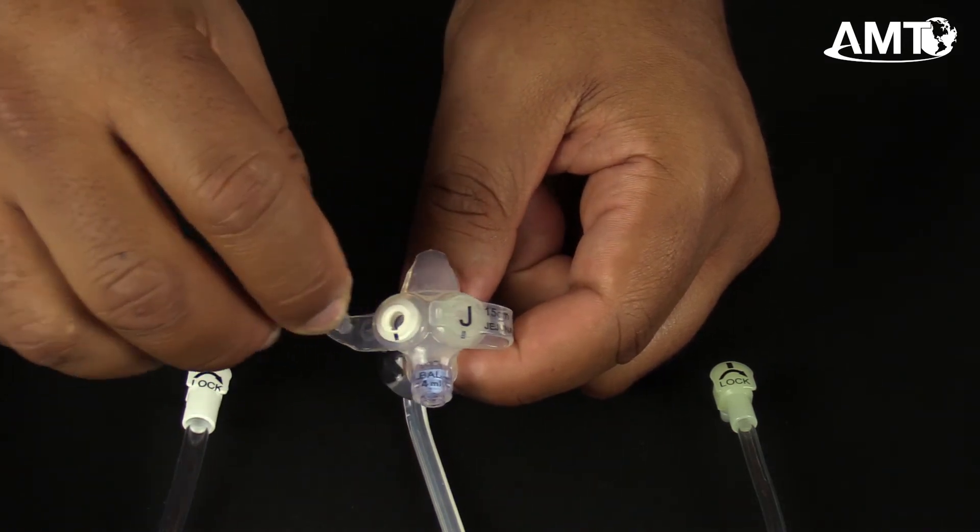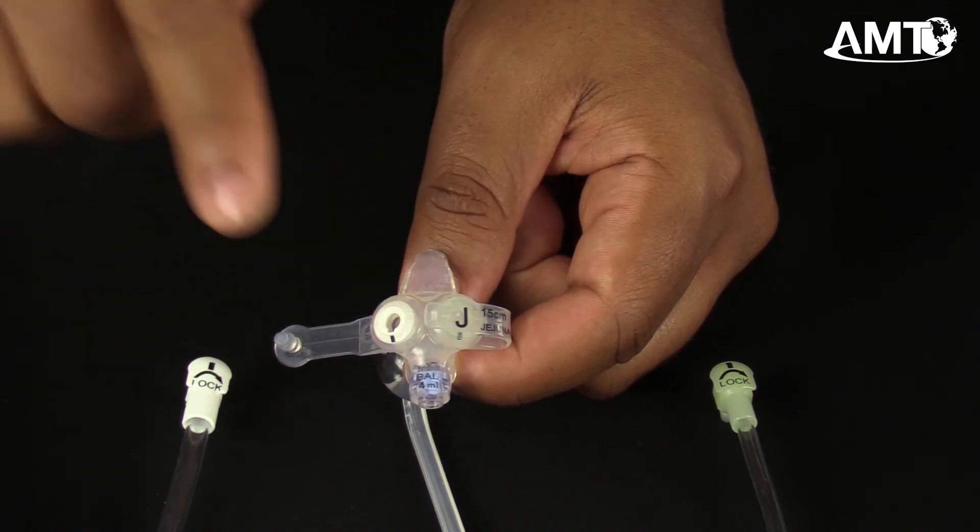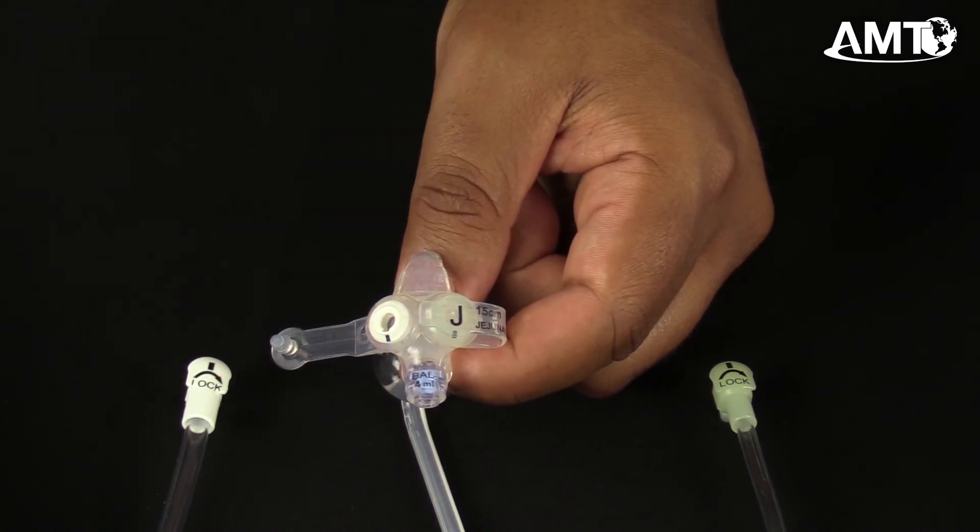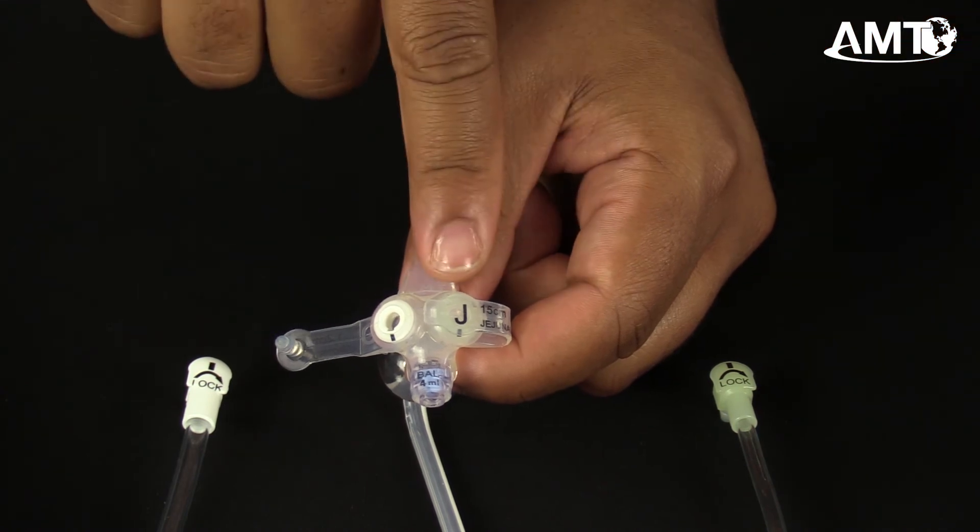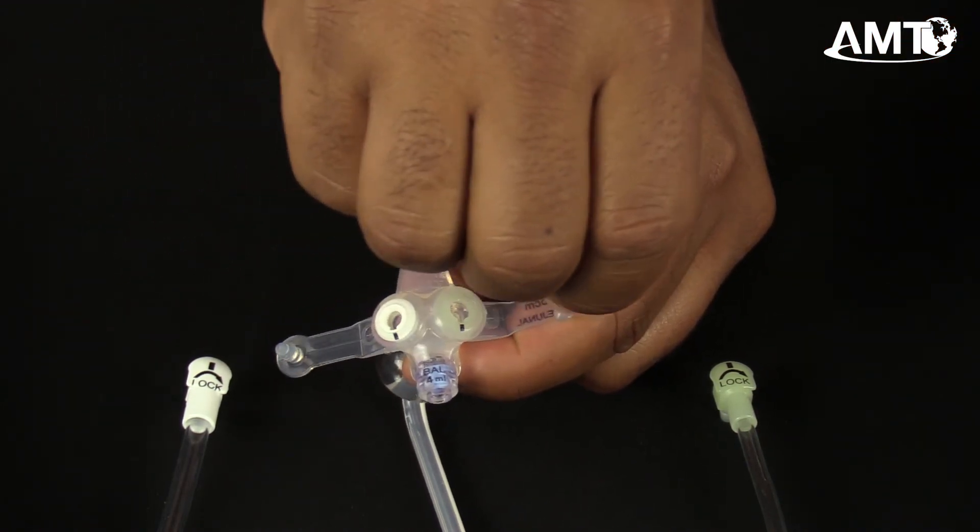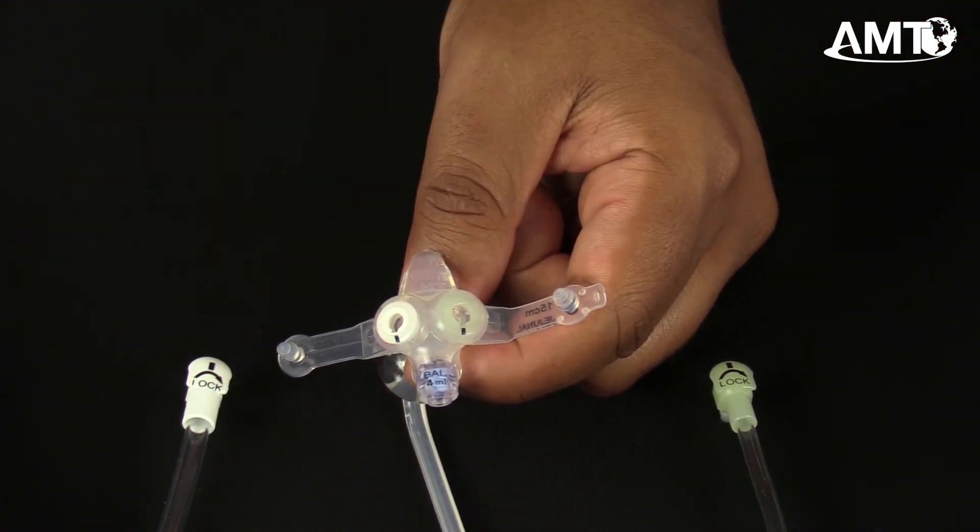The gastric extension set will only properly lock into the gastric white port, while the Jejuno feed set will only properly lock into the Jejuno glow green port. Both ports feature an anti-reflux one-way valve.